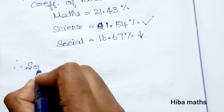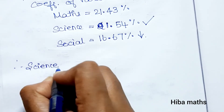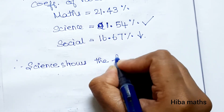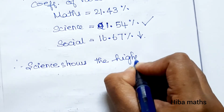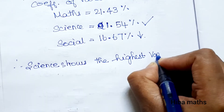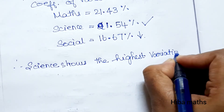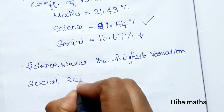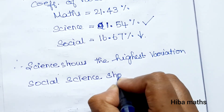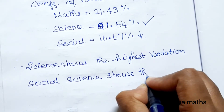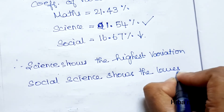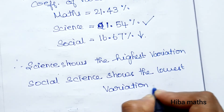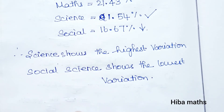Therefore, Science shows the highest variation, meaning it is the least consistent subject. Social Science shows the lowest variation, meaning it is the most consistent subject.